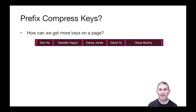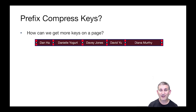Given that we have variable length entries, a natural question is how can we get more index entries, particularly more keys, onto a page? After all, the more index entries we have, the more pointers we have, the bigger fanout we have. With bigger fanout, we might actually have a shorter tree, which will mean fewer IOs to do a search.